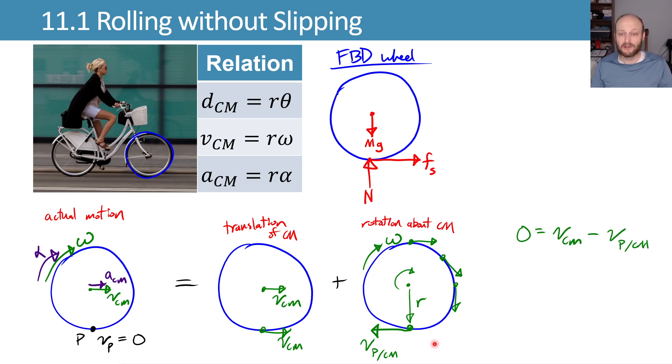So we'll get zero equals VCM minus VP/CM. That's the velocity of point P with respect to the center of mass in this pure rotation. And we know that in the pure rotation, the velocity has to be r omega because that's how rotation works. V equals r omega.